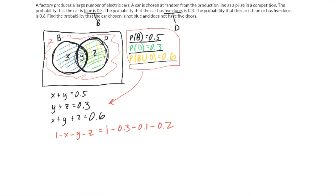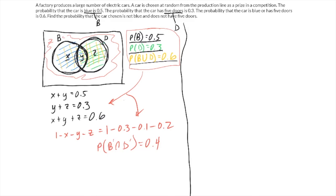So once we put this all together, the probability of not being blue and not having five doors equals 0.4. That's the first part of the question. It also wants us to do exactly the same thing but this time use a tree diagram. So that's what we're going to do next.